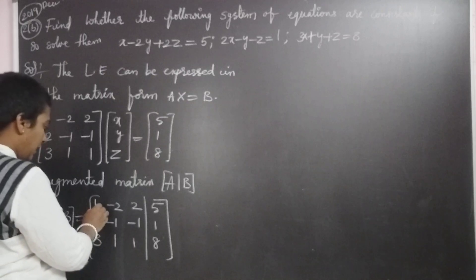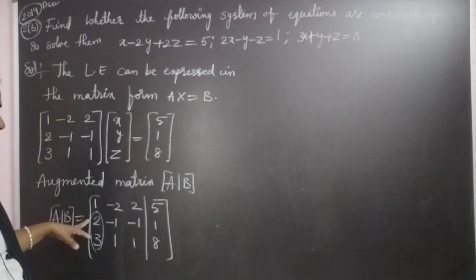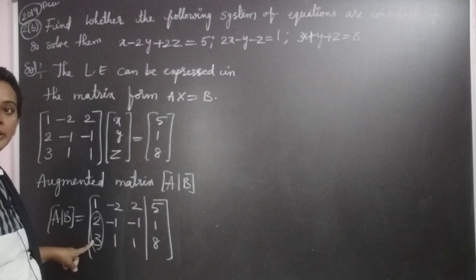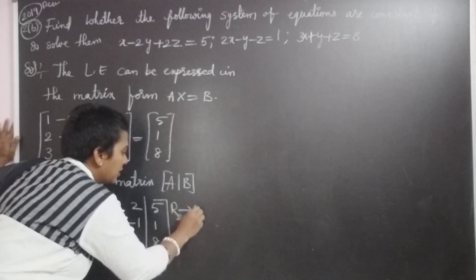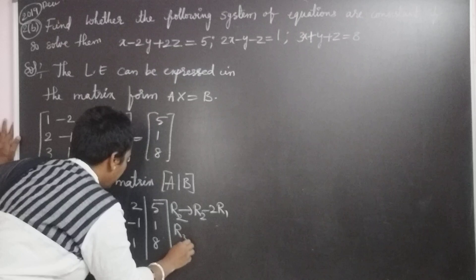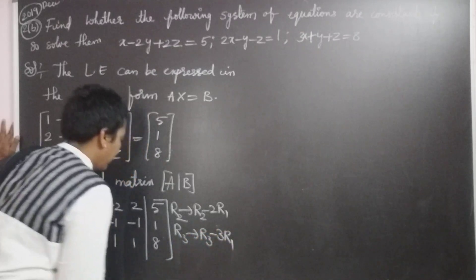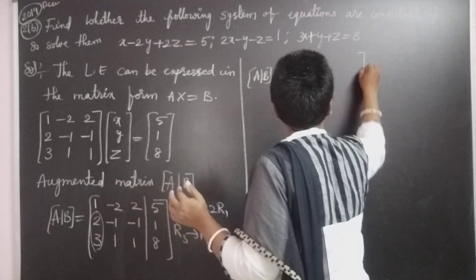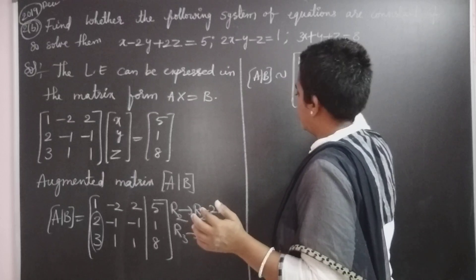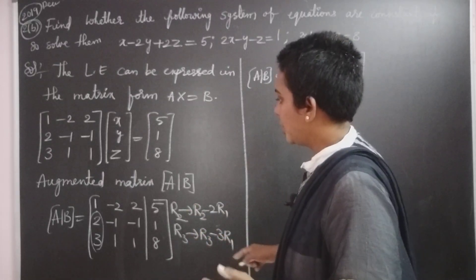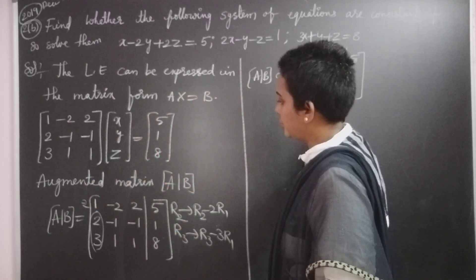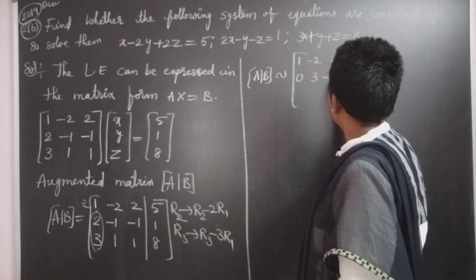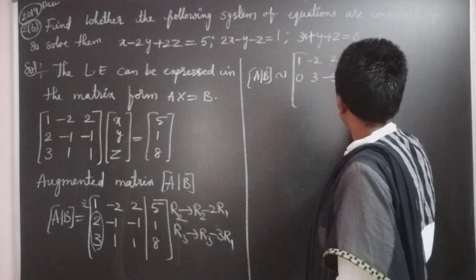We apply row operations on the augmented matrix [A|B] to reduce it to echelon form. First, we reduce the second and third row first elements to zero using R2 = R2 − 2R1 and R3 = R3 − 3R1. The first row remains 1, −2, 2, 5. The second row becomes: 0, 3, −5, −9.